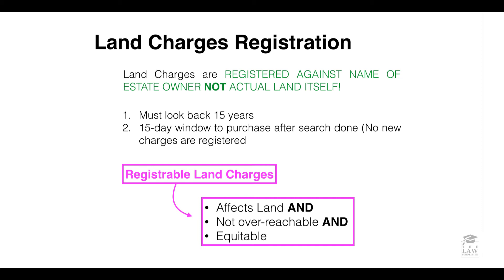Before we go on to Land Charges Registration, let's briefly look at where this is applicable. In the case of land charges, the registration actually occurs against the name of the estate owner and not the actual land itself. Consider the proprietary rights definition we discussed during the introduction — a proprietary right is something that attaches to the land and not the owner. Conversely, a land charge is registered against the name of the estate owner, a person, rather than the land itself. It must look back 15 years or at the history of the land within 15 years, and there is a 15-day window to purchase after the search is done where there are no charges registered.